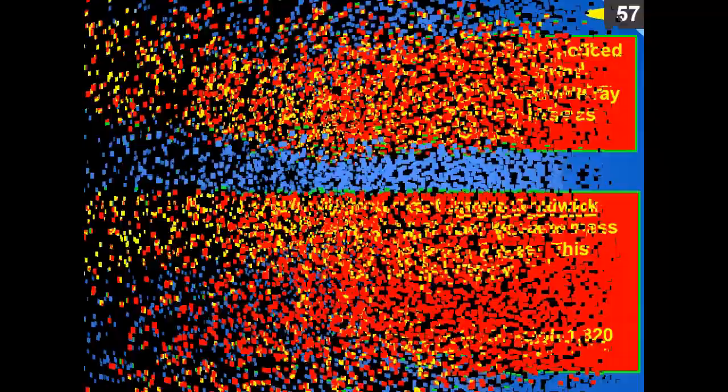Thomson's plum pudding model pictured an atom as solid but soft, with no space in between. In the late 1800s, Eugene Goldstein noticed that positive charges were traveling in the opposite direction in Thomson's cathode ray tube, and Thomson later recognized and named these charged particles protons. The neutron wasn't discovered until 1932, when English physicist James Chadwick discovered a particle with the same mass as a proton but no electrical charge. Protons and neutrons each weigh about 1,820 times more than an electron.